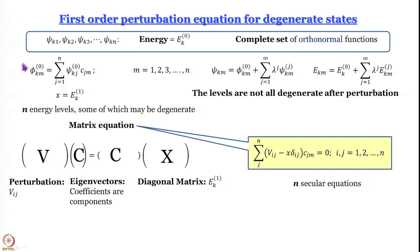First of all you need a linear combination, because you do not know which of these functions is going to contribute to which perturbed wave function — they are all identical, indistinguishable. Functional forms may be different but indistinguishable in the sense that energy is the same, so there is no way in which we can say that one particular wave function will contribute and the others will not.